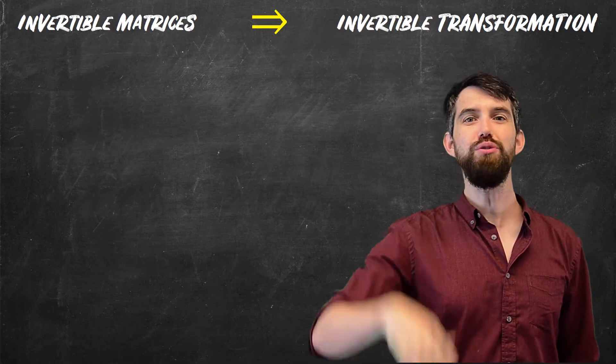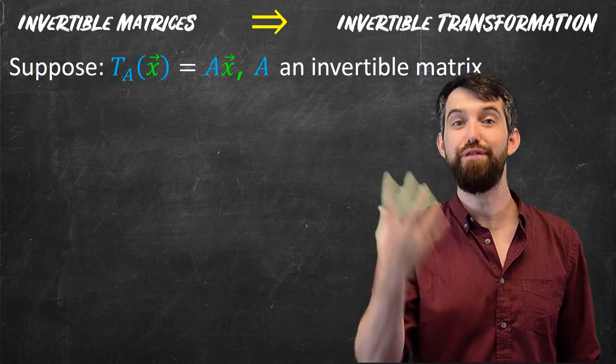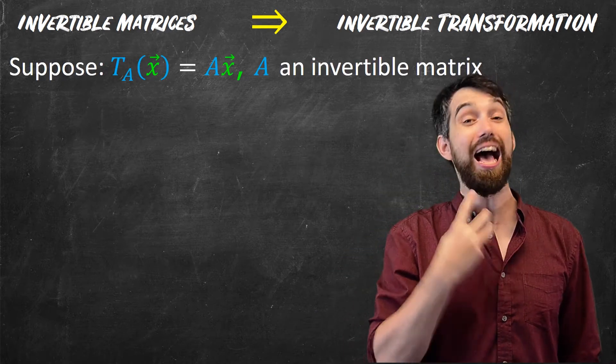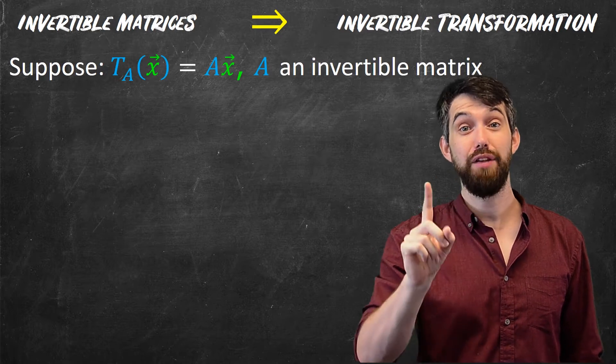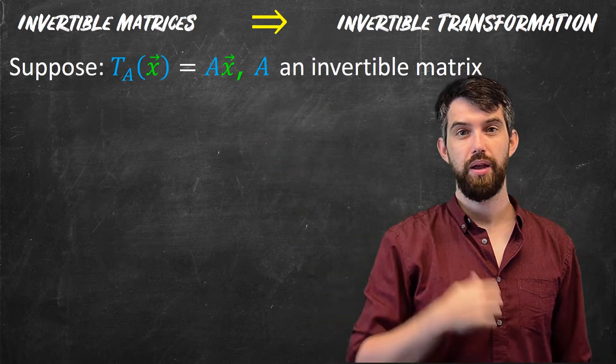So how do I begin? I want to imagine that I have a transformation T_A. So it's a transformation defined by a matrix A, but it has the property that the A is invertible. That's because I'm starting over here on the left-hand side.